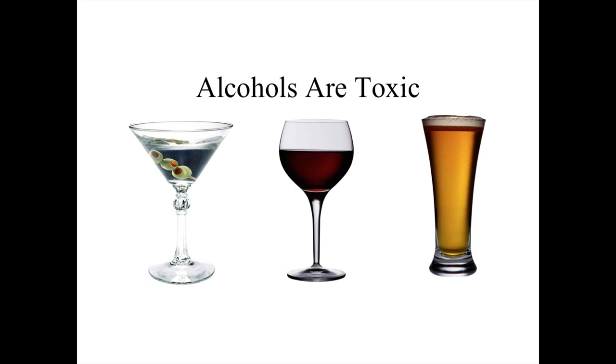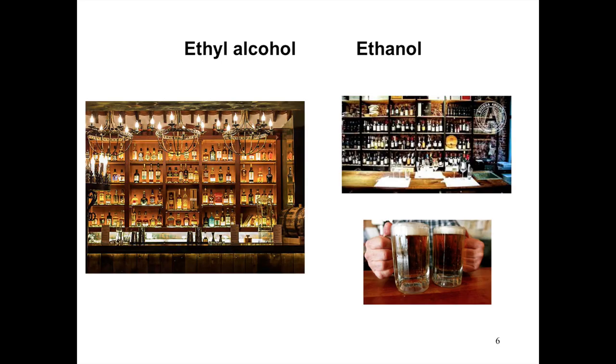Alcohols are a type of organic chemical and there are thousands of them. Ethyl alcohol is the one we will be talking about. Ethyl alcohol, also known as ethanol, is found in bar drinks like whiskey as well as wine and beer.